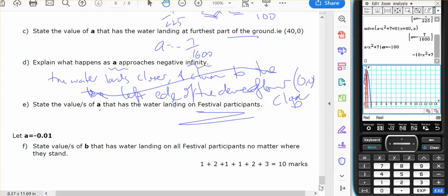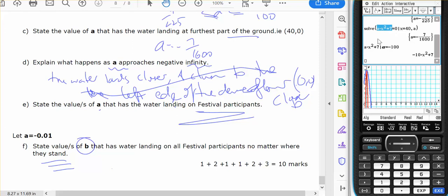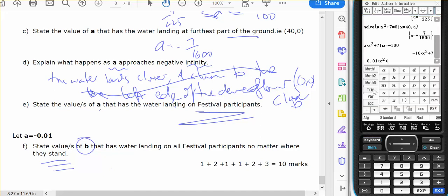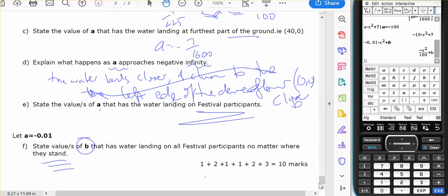And lastly find the values of b for which the water lands on the festival no matter where they stand. So now we have a situation where instead of having this I've been told that a equals negative 0.01 and that's going to be b. So for it to land on the festival participants I'm interested in 15-0, 20-0, 23-0, and 40-0.